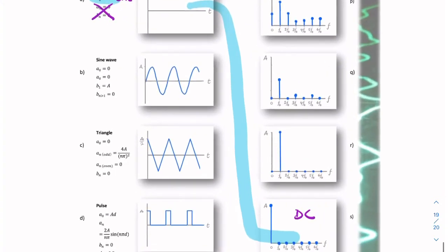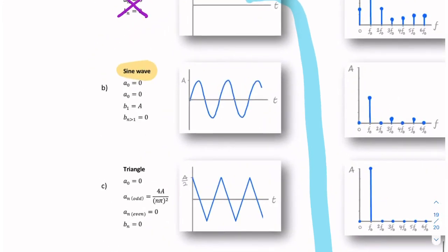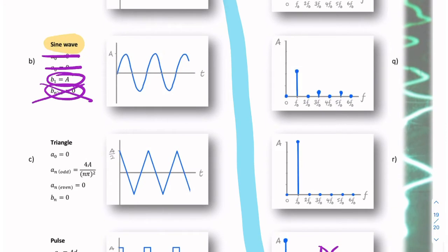The next signal — again, nice and easy. What we have is a sine wave, so it doesn't have a DC value; the DC value is zero. Because it's a sine wave, it doesn't have any cosine components, and it only has one sine component: b1. So it doesn't have any higher components. We're looking for a spectrum which has only one component, and that component is for n equals 1.